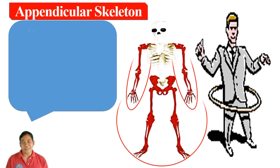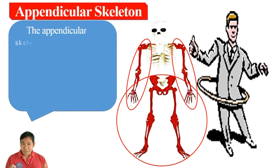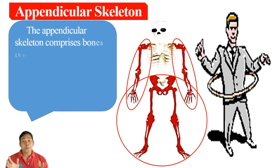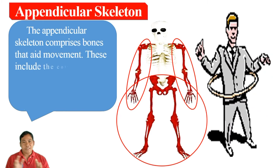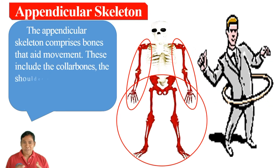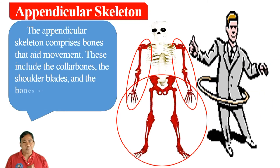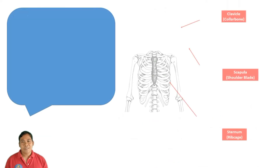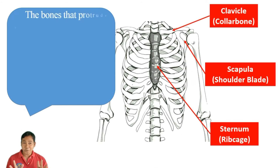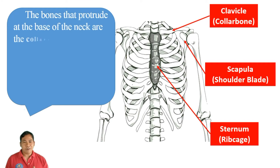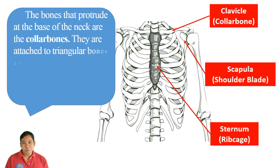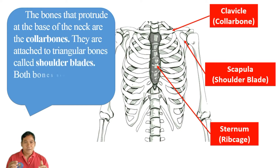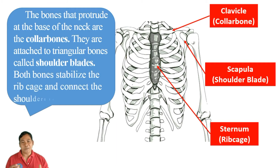The appendicular skeleton comprises bones that aid movement. These include the collar bones, shoulder blades, and the bones of the arms, legs, and hips. The bones that protrude at the base of the neck are the collar bones. They are attached to the triangular bones called shoulder blades. Both bones stabilize the rib cage and connect the shoulders to the arms.